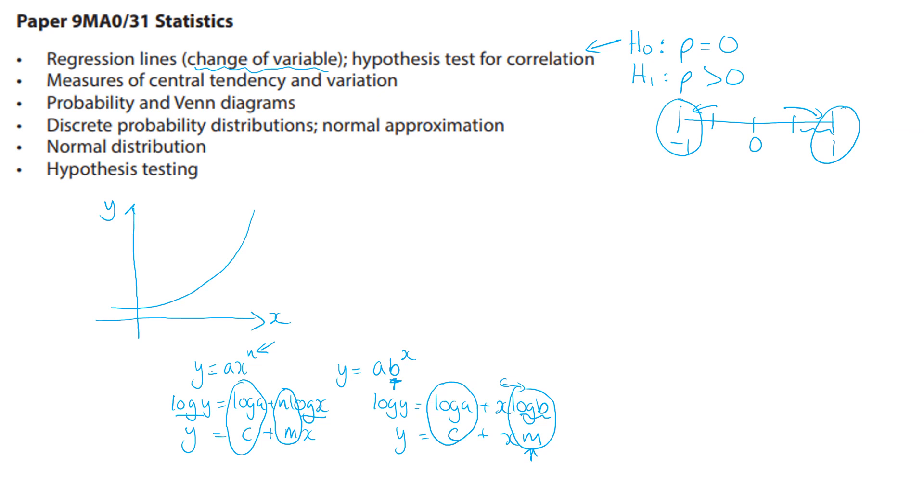Measures of central tendency and variation: so when you're looking for measures of central tendency that's where is the data centrally located, so that is looking at your mean, median and mode. Now when you've got symmetric data you usually find the mean, and the thing that goes with the mean to measure spread or variation is the standard deviation.